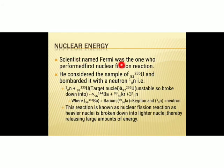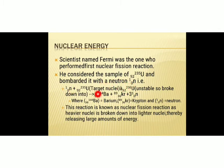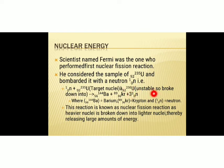Scientist Fermi was the first to perform a nuclear fission reaction. He took a sample of uranium (₉₂U²³⁵) and bombarded it with a neutron (₀n¹). A neutron has mass number one and atomic number zero, meaning it is neutral. When neutron is bombarded with uranium, you get uranium-236 (₉₂U²³⁶), which is an unstable state.